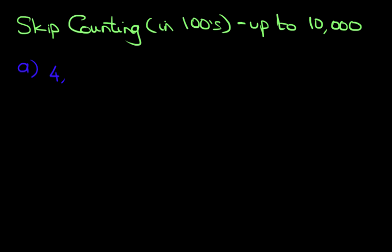Our first example is 4,500. What number comes after 4,500 if we are counting in 100s? First, highlight the 100. It's 5. Add 1. That becomes 6. So the answer is 4,600. The units and tens do not change. 4,500 becomes 4,600.